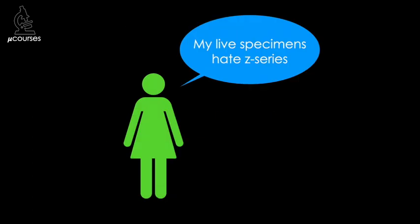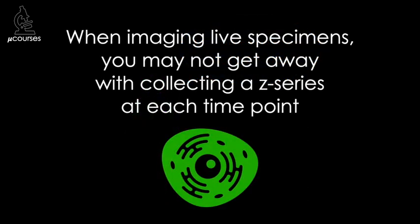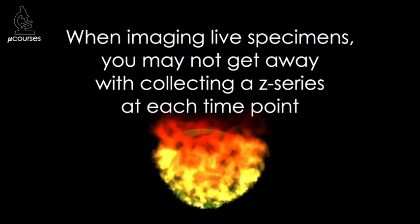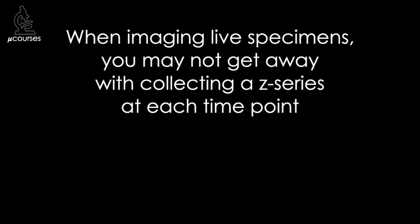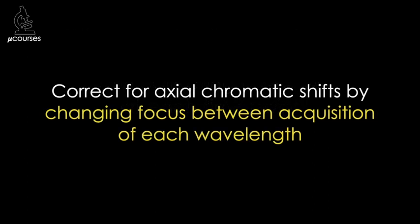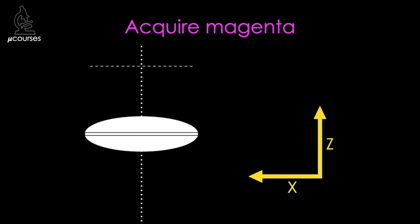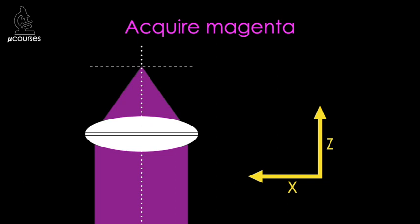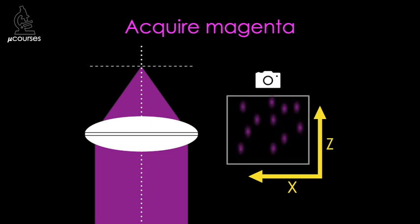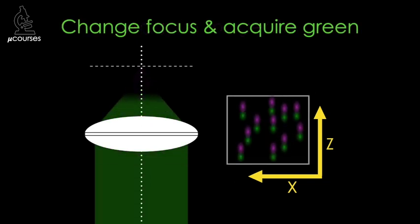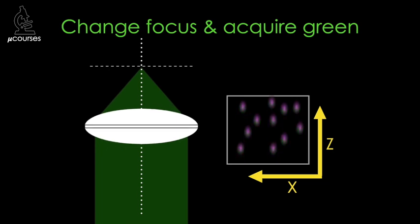If you need to correct for chromatic aberration in live specimens, you might not be able to get away with collecting a Z-series at every time point. In this case, you can take another approach: correct for axial chromatic shifts by changing focus between acquisition of each wavelength. Most image acquisition software can be set up to move the focus motor between images — this allows you to focus on one wavelength, change to the next wavelength, move the focus motor by the measured axial shift, and then acquire the next image.